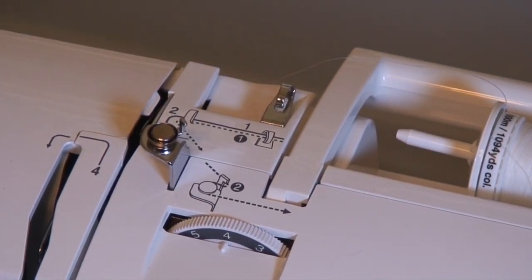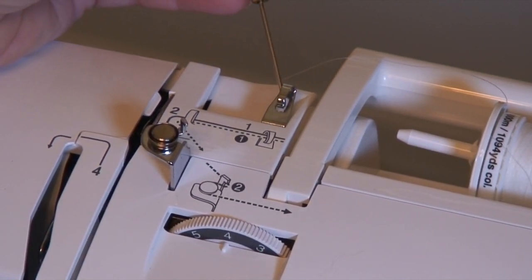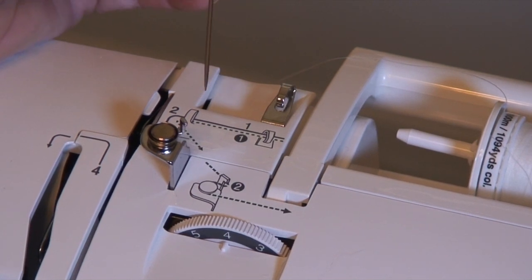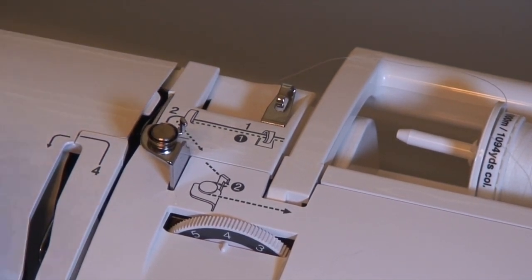And if you look at the top of the machine, you'll see that there are guides to show you how to thread. So it's going to go through number one here, this first thread guide, then it's going to go around this, which is number two, then it's going to drop down, come back up, and drop back down again, and we'll get to that in a minute.